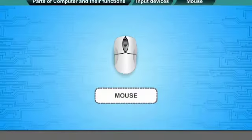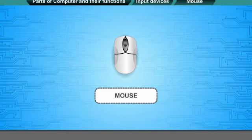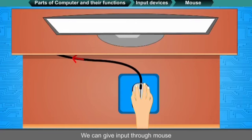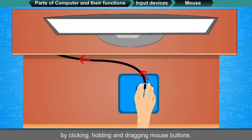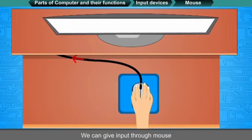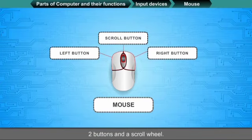Mouse: A mouse is used to point on the screen by clicking, holding and dragging mouse buttons. A computer mouse has two types of buttons and a scroll wheel.